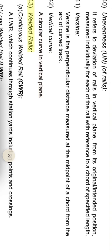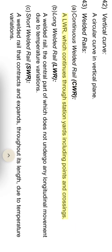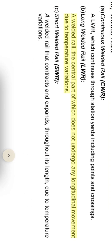Welded rails: (a) Continuous welded rail (CWR) or LWR which continues through station yards including points and crossings. (b) Long welded rail (LWR): a welded rail the central part of which does not undergo any longitudinal movement due to temperature variations. (c) Short welded rail (SWR): a welded rail that contracts and expands throughout its length due to temperature variations.